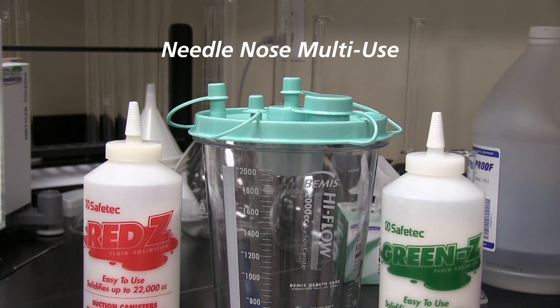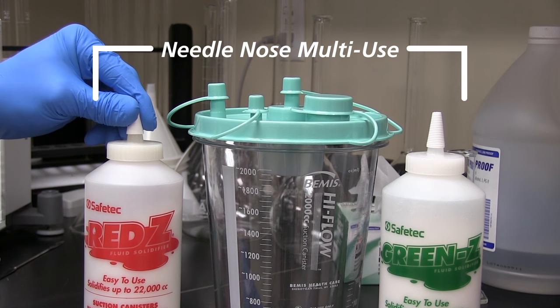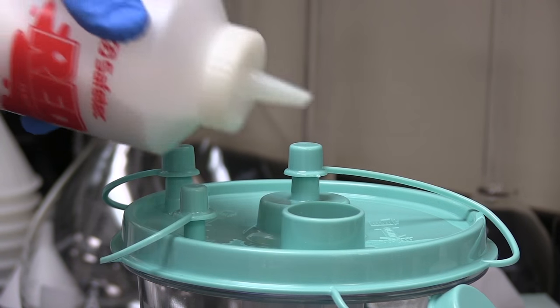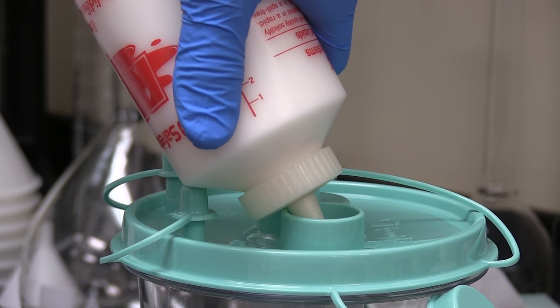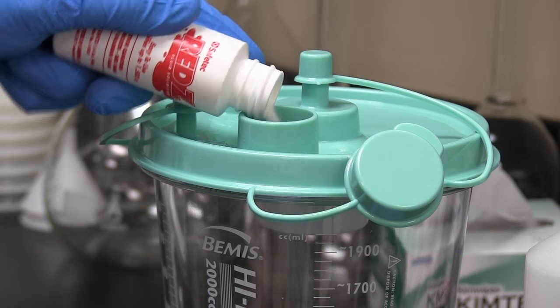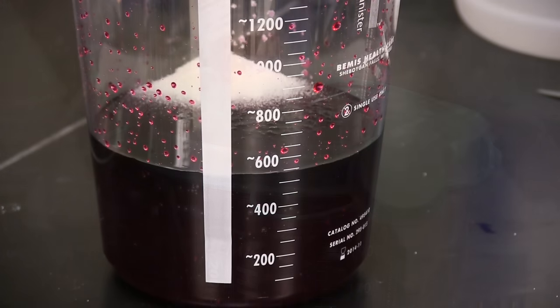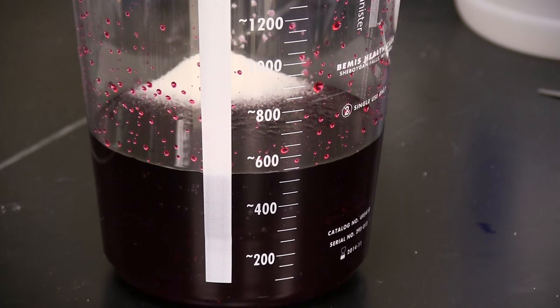When using the needle nose bottle, remove the cap, cut the tip, and simply pour the needed amount of solidifier into the porthole of the canister. Solidification times will vary based on canister content. Once you are done with the solidifier, replace the cap for future use.